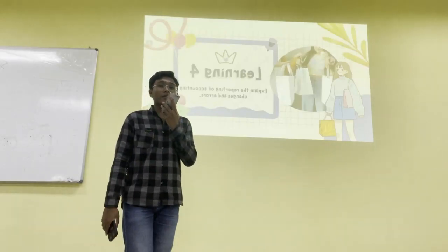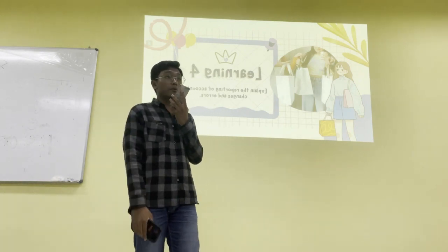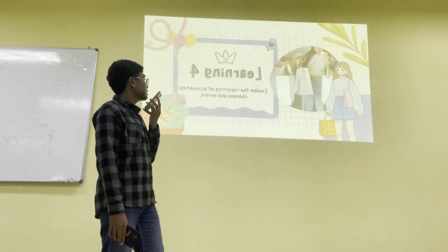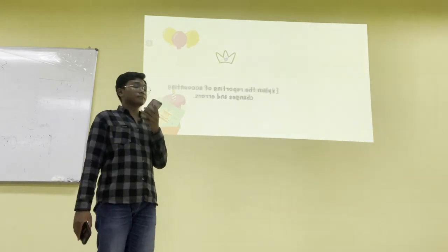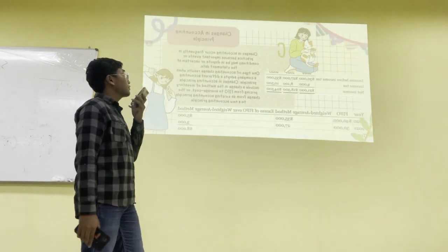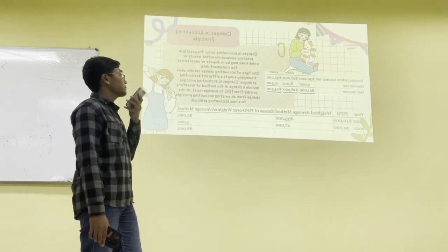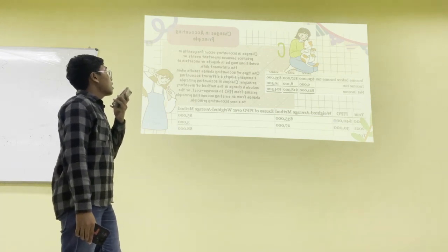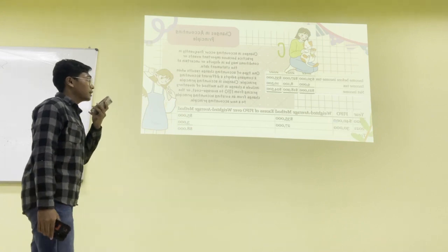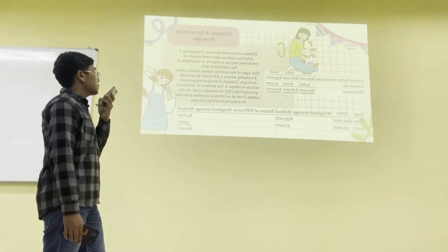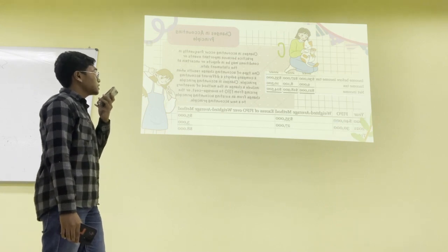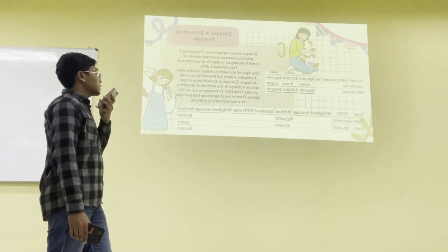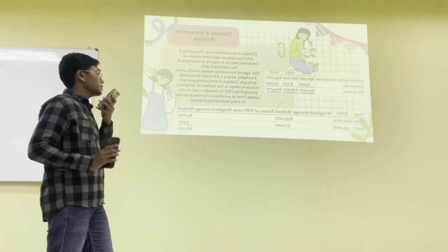Hello everyone, I'm Ammar Mahmah Zikra from group 2. I will present learning objective 4 about explaining the reporting of accounting changes and errors. Changes in accounting occur frequently in practice because important events or conditions may be in dispute or uncertain at the statement date. One type results when a company adopts a different accounting principle, such as a change in the method of inventory pricing from FIFO to average cost, or a change from an existing accounting principle to a new one.